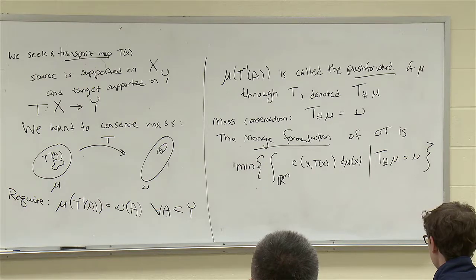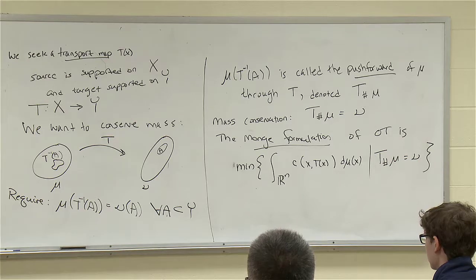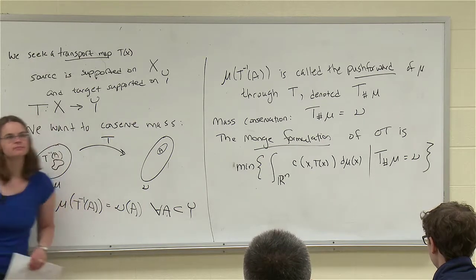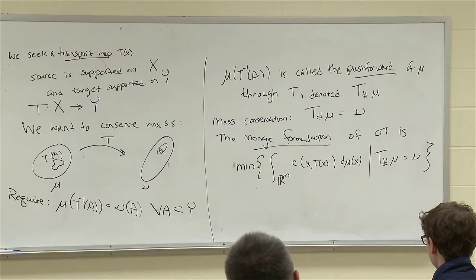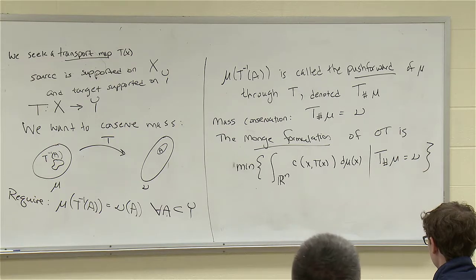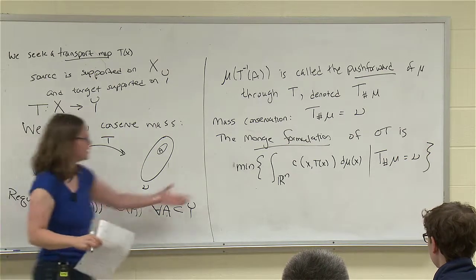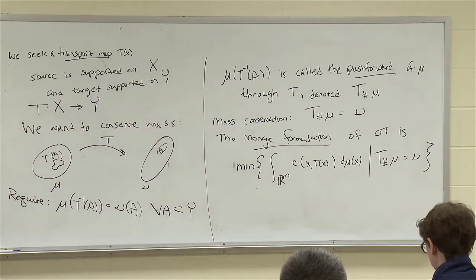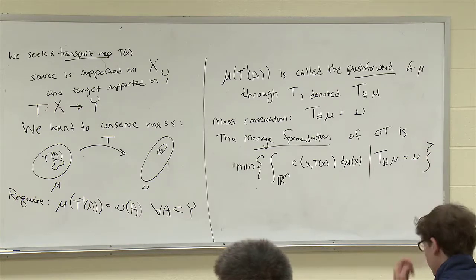What are some problems with this formulation? One potential issue is regularity — do we have enough to make sense of this? Another obvious question any time you take an infimum of something: is there a minimizer? Does the solution even exist?